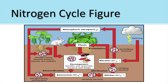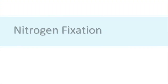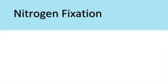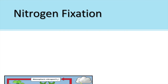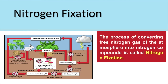The nitrogen cycle takes place in five steps: nitrogen fixation, nitrogen assimilation, ammonification, nitrification, and denitrification. Starting with the first step — nitrogen fixation — it means the process of converting the free nitrogen gas of the atmosphere into nitrogen compounds. In other words, nitrogen gas is converted into nitrogenous compounds.